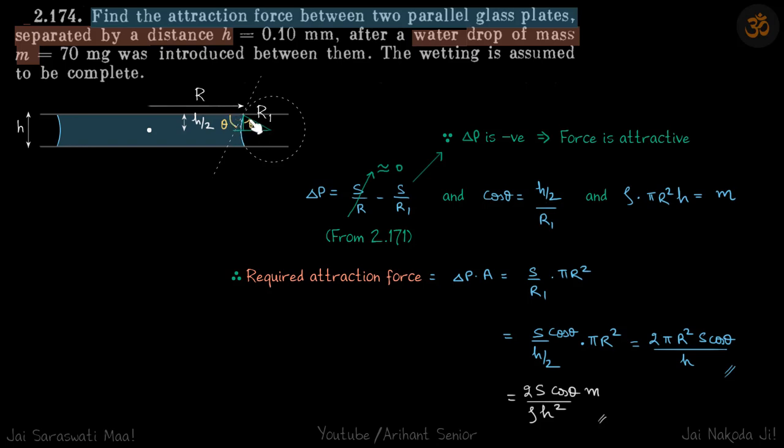So this is the contact surface, this theta. Cos theta will be h/2 upon R1. From here we will get the value of R1, because R1 is not given to us.